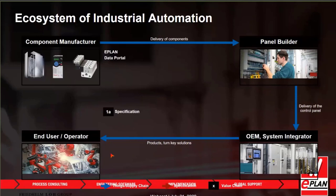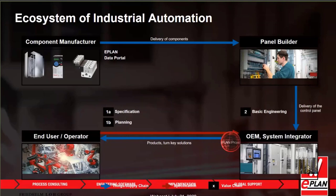Looking at the engineering process, an operator starts with a specification identifying requirements, available space, and factories. Then general planning begins, identifying what's needed to put the product together. This information is sent to an OEM or system integrator, where the ePlan project gets created — capturing controls documentation and data. The project then goes into detail engineering for pneumatics or electrical, defining wires, terminals, and all control system details, enriching the ePlan project.